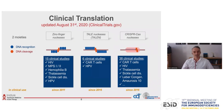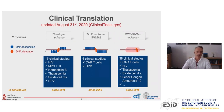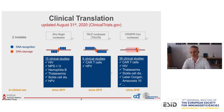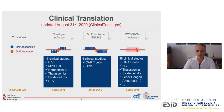Designer nucleases have been translated to the clinic since 2011. 15 clinical trials are ongoing or have been concluded for zinc finger nucleases, six clinical trials involve TALEN nucleases, and 38 clinical trials are underway using CRISPR-Cas nucleases. When you look at this abbreviated list, none of them actually includes a primary immune deficiency.